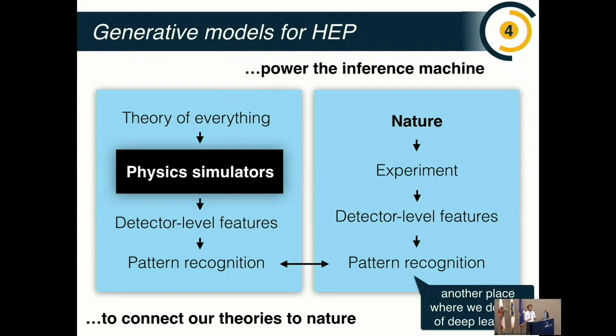Let me tell you about how we use generative models to empower data analysis in energy physics — in particular, collider-based energy physics. The idea is that we want to do inference: there's some theory of everything (the current one is called the standard model), but someone might posit a new theory with some parameters. We take that theory, run physics simulations — this black box encompasses an incredible amount of effort modeling processes spanning many orders of magnitude in length scales — and out of the simulator comes something that looks like real data. We compare pattern recognition output on synthetic data to that on real data from the LHC, and use this comparison to do inference on whatever theory we started with.